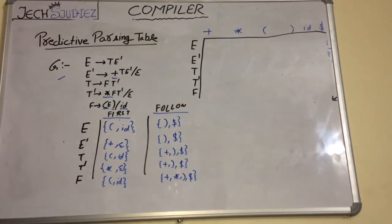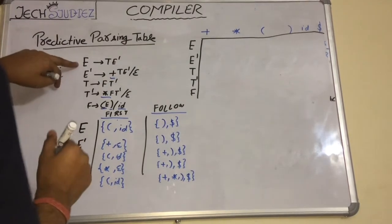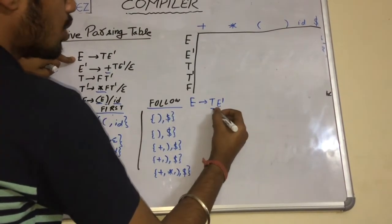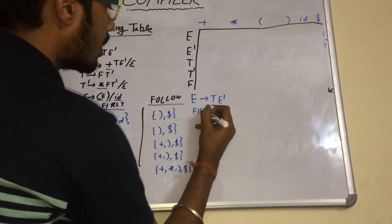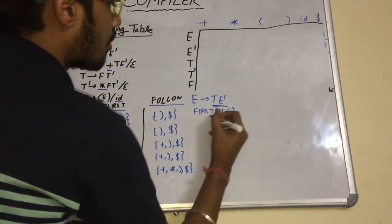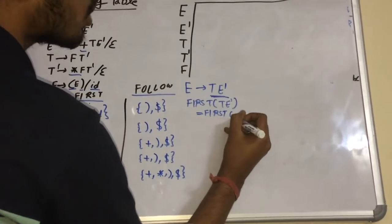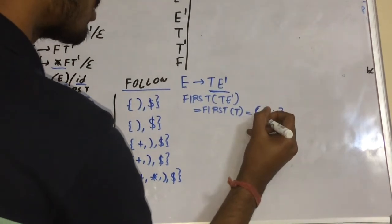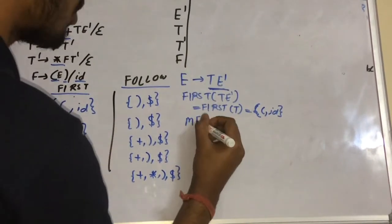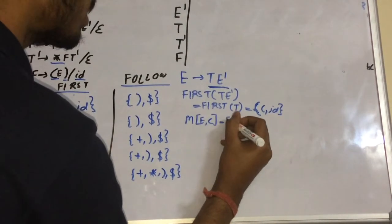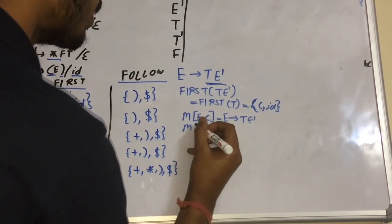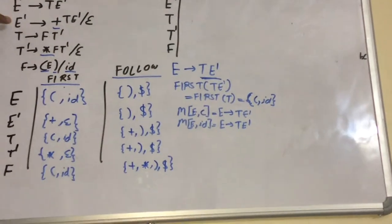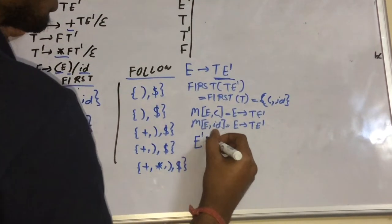Take the first production: E→TE'. We have to find FIRST(TE'). FIRST(TE') equals FIRST(T), and from the table, FIRST(T) is opening parenthesis and id. So M[E, '('] = E→TE' and M[E, id] = E→TE'.